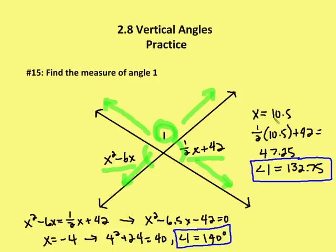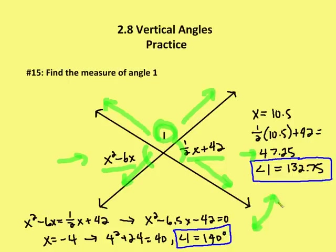Plugging in the first value, x equals 10.5: one-half times 10.5 plus 42 equals 47.25. The measure of angle one is supplementary to 47.25, so one possible value is 132.75 degrees. For the second value, x equals negative 4: negative 4 squared is 16, and 16 minus 6 times negative 4 is 16 plus 24, which equals 40. The supplement to 40 degrees is 140 degrees. So I now have two possible values for the measure of angle one: 132.75 degrees and 140 degrees.